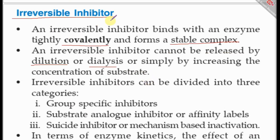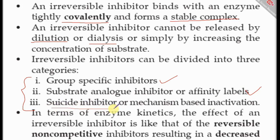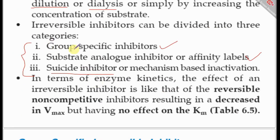Irreversible inhibition has three subtypes: group-specific inhibitors, substrate analog inhibitors or affinity labels, and suicide inhibitors or mechanism-based inactivators. In terms of enzyme kinetics, irreversible inhibitors resemble reversible non-competitive inhibitors because they decrease the Vmax but have no effect on the KM.